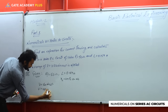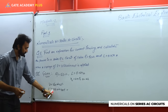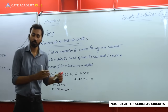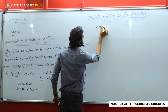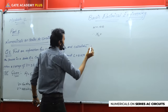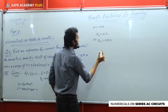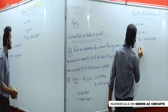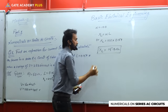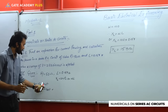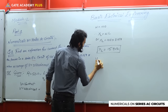Since ω = 100 is directly available from the voltage expression, there is no need to calculate it separately. Therefore, XL = ωL = 100 × 0.159 = 15.9 ohms. This is how we get the value of XL. Now in the given section, we have both R = 50 ohms and XL = 15.9 ohms available, along with Vm = 283 volts.